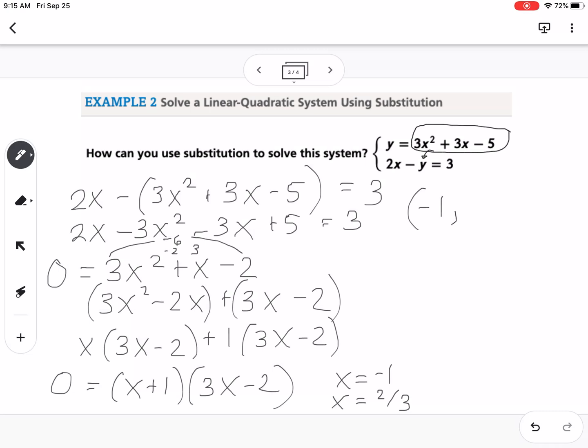So if we plug negative 1 in to either equation, probably the top one because it's already y equals, so you do 3 times negative 1 squared plus 3 times negative 1 minus 5, and you get negative 5. And then if I plug 2 thirds in, I get negative 5 thirds out. So those are my two solutions.